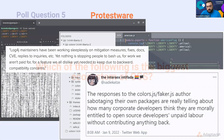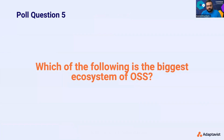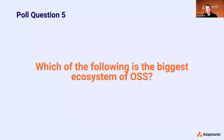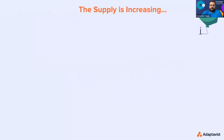Let's go to our last poll question: which of the following ecosystems do you think are the most vulnerable in open source software? We mentioned Python in the slides, but what do you think is the biggest? And the answer is JavaScript — people actually got it correct.